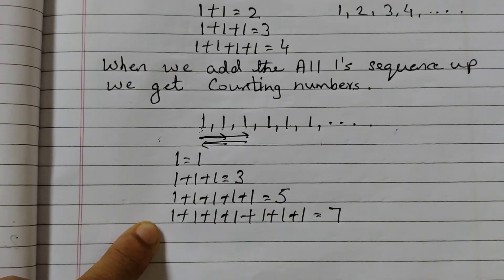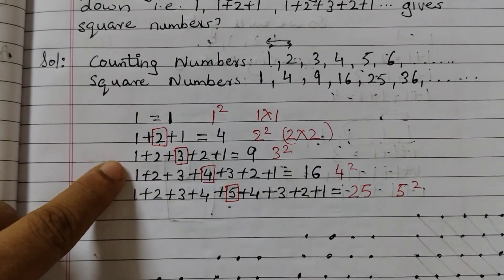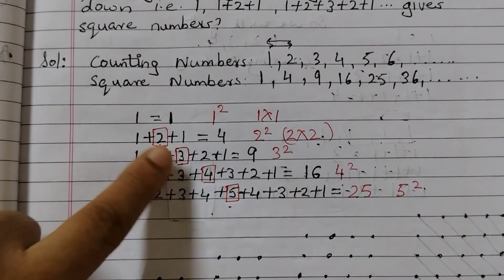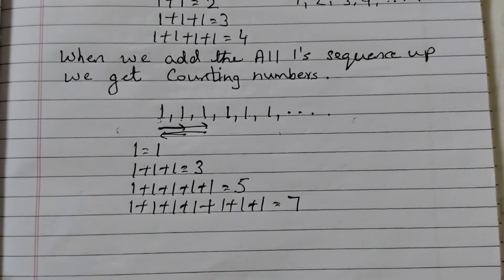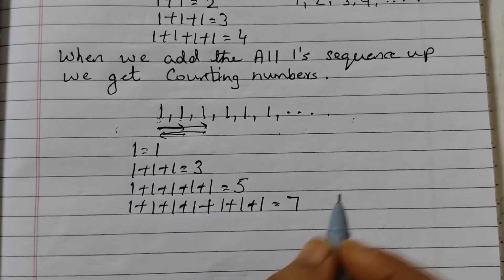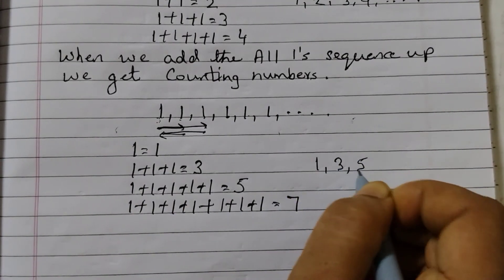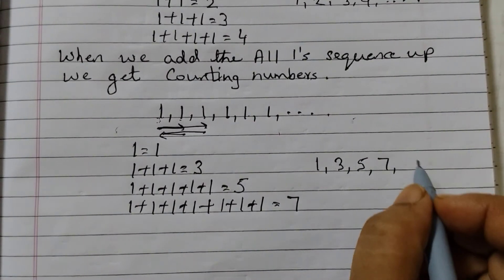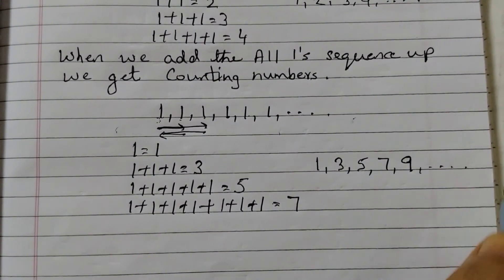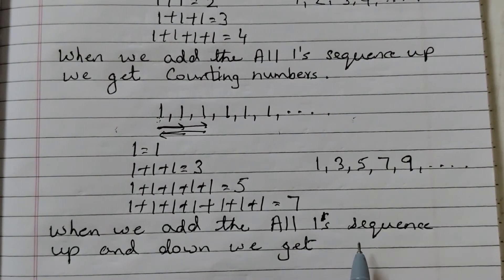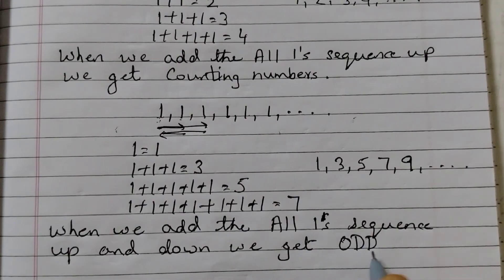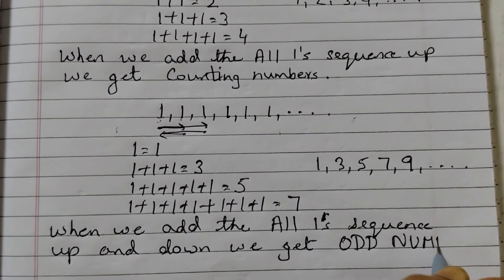This is a similar up and down pattern we have done previously in question number 2. Here we are doing the same thing but with just 1s. So the pattern we get is 1, 3, 5, 7 — and the next one would be 9. That means we are getting all odd numbers. When we add the all ones sequence up and down, we get the odd number sequence.